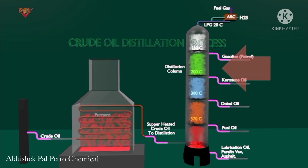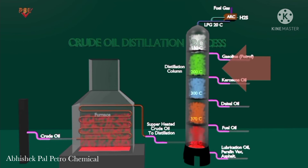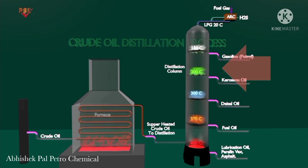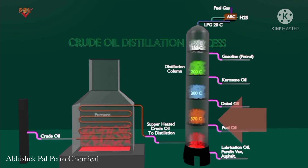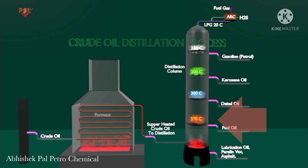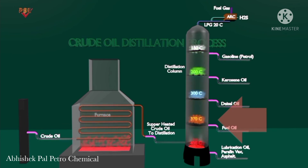Naphtha could be blended into motor gasoline but is more likely sent to a catalytic reforming unit for octane improvement. Kerosene is generally treated and used as jet fuel. Heavier distillate streams are also treated and blended into finished diesel fuel or home heating oil, or are further processed in conversion units such as fluidized catalytic cracking and hydrocracking.